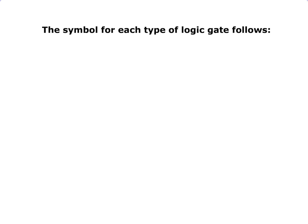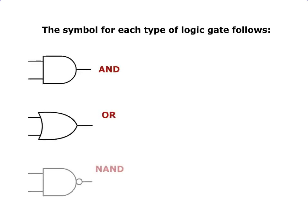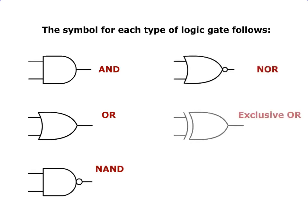The symbol for each type of logic gate follows: AND, OR, NAND, NOR, EXCLUSIVE OR, and EXCLUSIVE NOR.